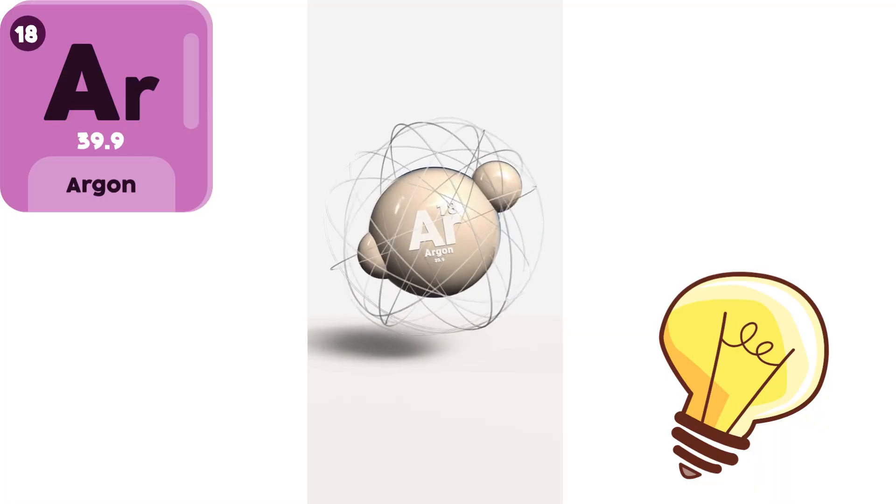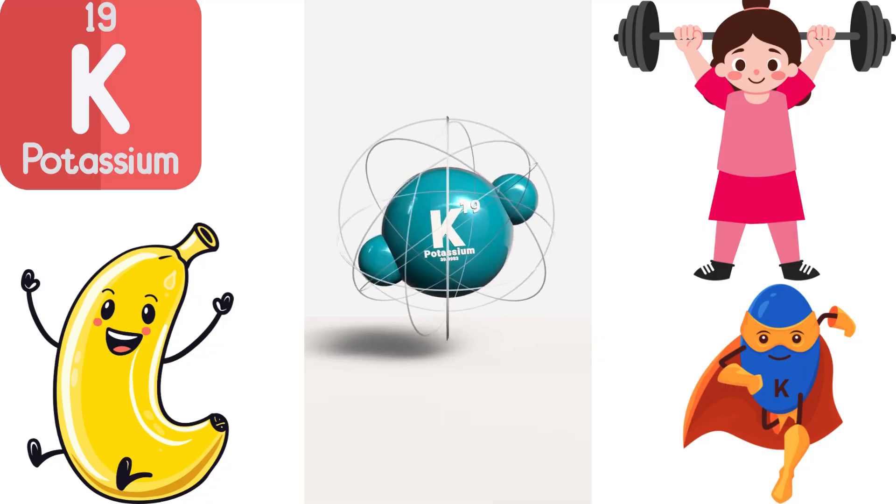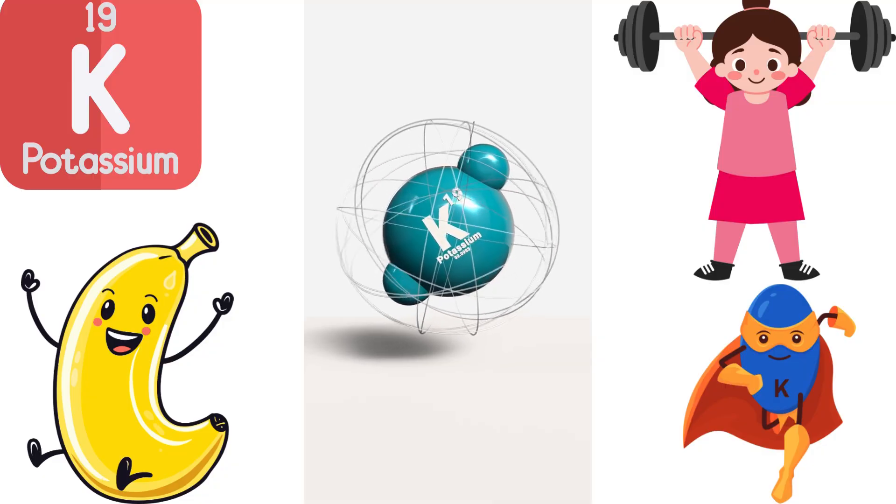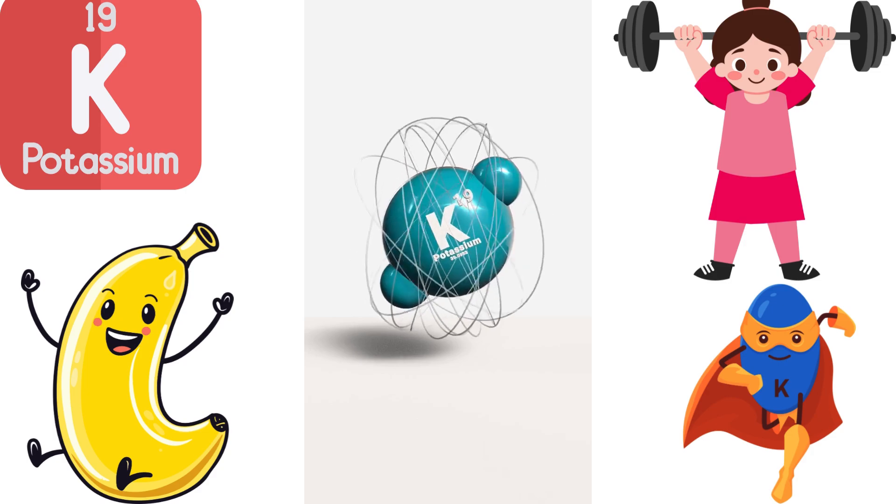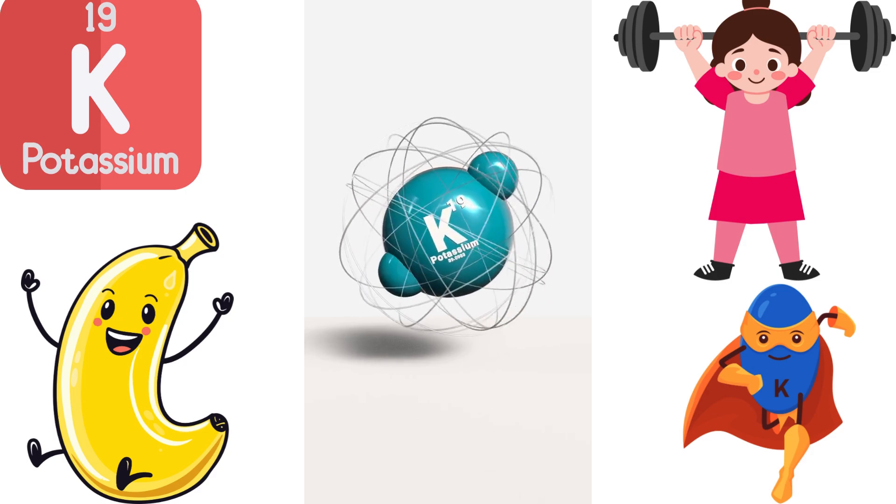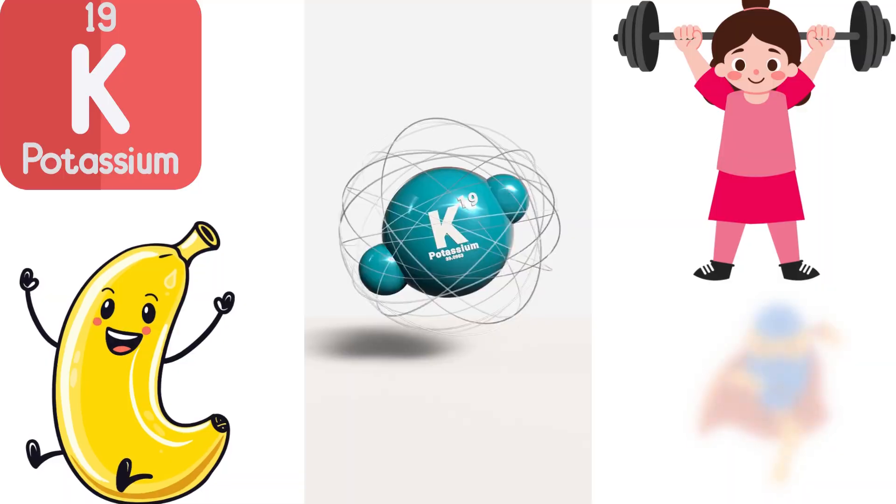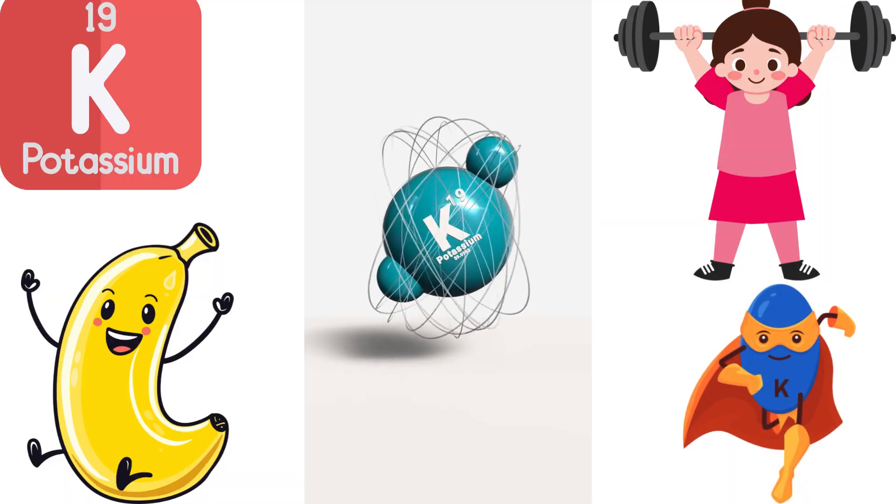Nineteen. Potassium. Potassium is a soft metal that reacts quickly with water. We also find potassium in bananas, which help give us energy and keep our muscles strong.